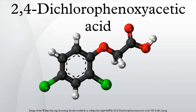2,4-D was first synthesized by Robert Pokorny in 1941, who was working in the U.S. The related compound MCPA was discovered at about the same time by scientists in the UK. Both compounds were developed afterwards as part of a clandestine wartime effort to create chemical warfare agents for use in World War II.